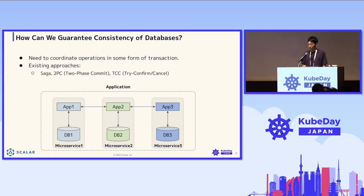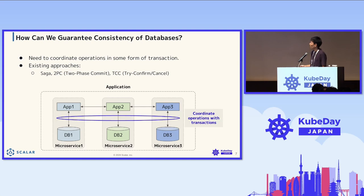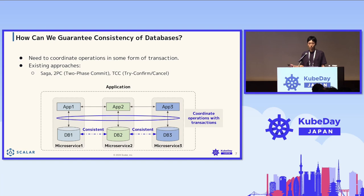How can we guarantee consistency of databases? Essentially we need to coordinate operations — these separate operations have to be coordinated properly with some form of transaction so that we can guarantee consistent states. There are several existing approaches: Saga, two-phase commit (2PC), and TCC (try, confirm, cancel). Let's look at these approaches one by one.